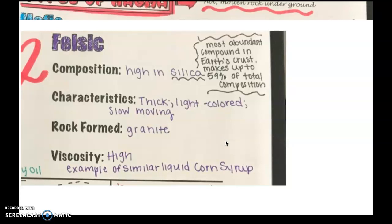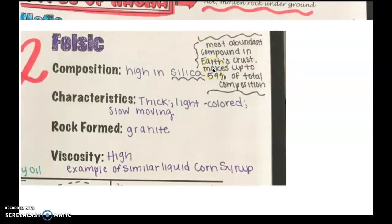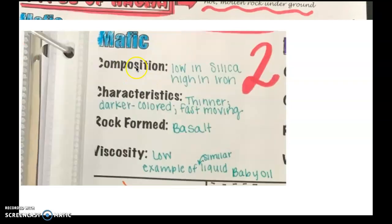Silica is the most abundant compound in the earth's crust. It makes up to 59% of the total composition. The majority of the other part is made out of oxygen. Silica is really what we're testing for here. Felsic is high in silica; mafic is low in silica.